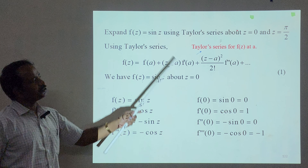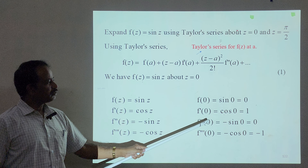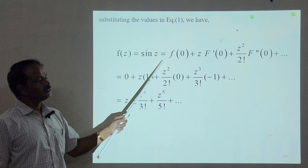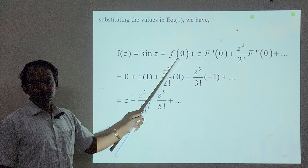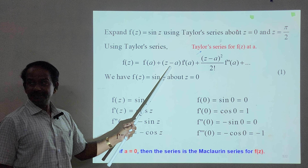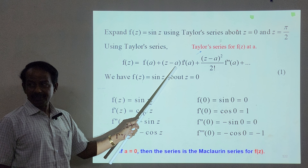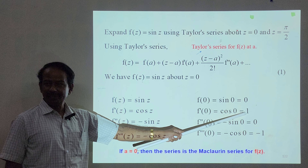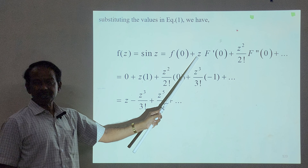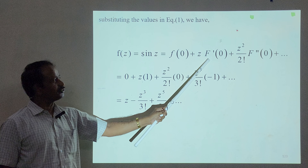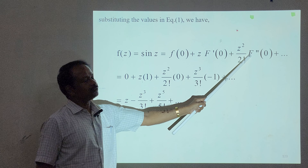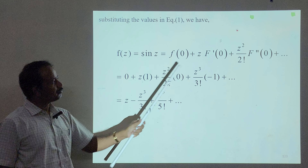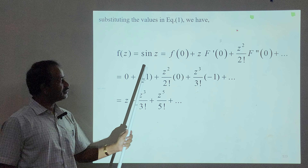Now we substitute into the Taylor series formula. f(z) equals sin z, which equals f(0) plus z times f′(0) plus z²/2! times f″(0), and so on. f(0) is 0, z minus a is z minus 0 equals z, and f′(0) is 1, so the first term gives z times 1 equals z. Then z squared by 2 factorial times f double dash of 0 — substituting the computed values into the formula gives the Taylor expansion of sin z about z equals 0.